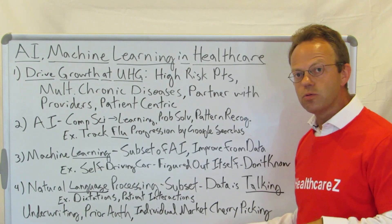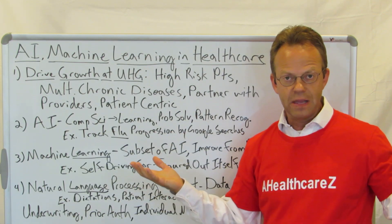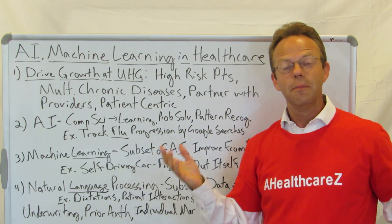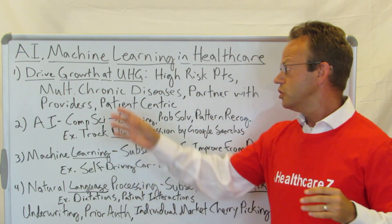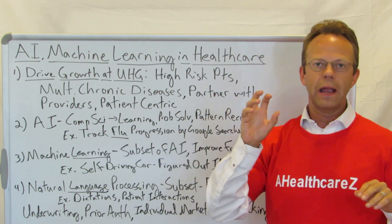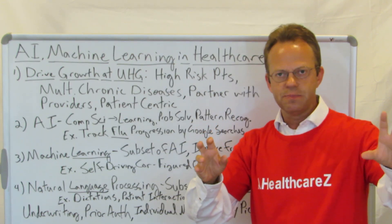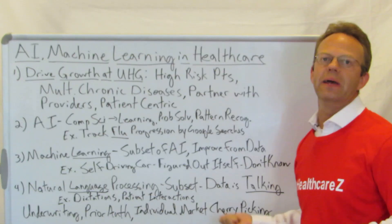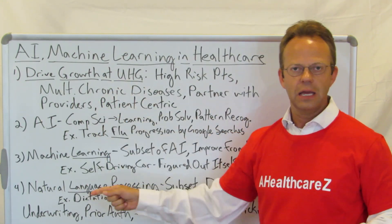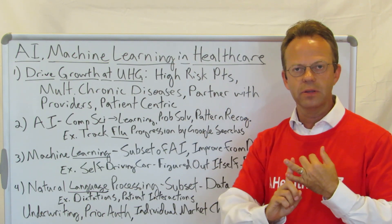In the individual market — UnitedHealthcare is somewhat famous for not really entering the individual market very much — you could use AI and machine learning to figure out how to set premiums, how claims expenses are going, and then cherry-pick the individual market using AI and machine learning to improve revenue and profitability.